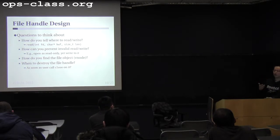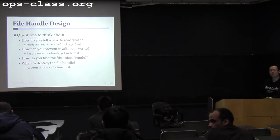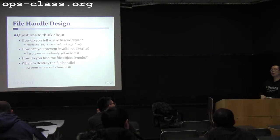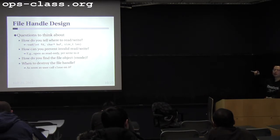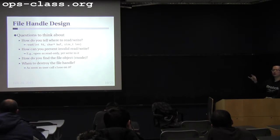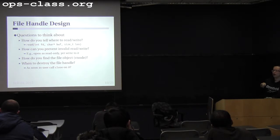That's how you determine the right time to destroy a file handle and reclaim its file descriptor. Question: is the reference count the number of processes, or the number of file descriptors pointing to the same handle? Good question — you're referring to dup2. It's also possible for the same process to have two file descriptors pointing to the same file handle. In that case, you also need to increment the reference count. So file handles can be shared within the same process by multiple file descriptors, or across multiple processes — both cases require maintaining the reference count.